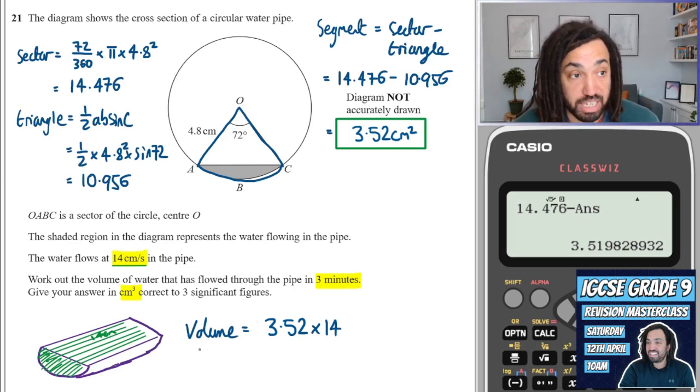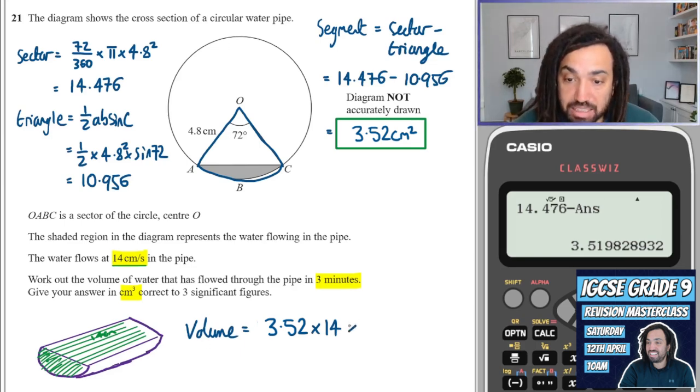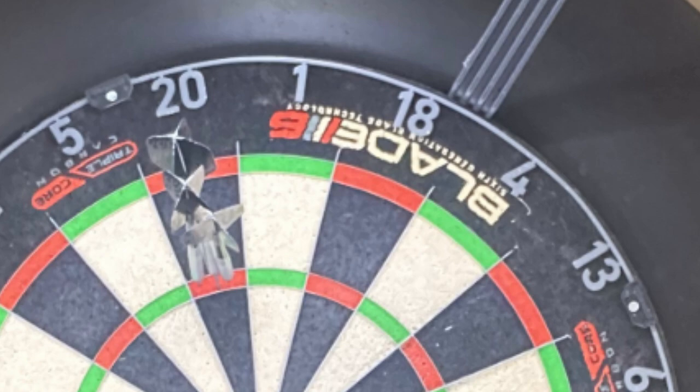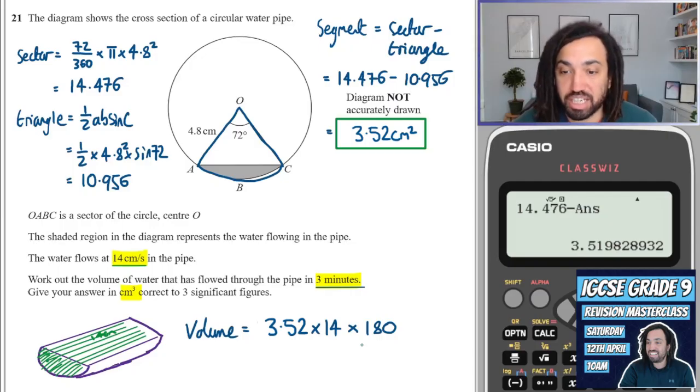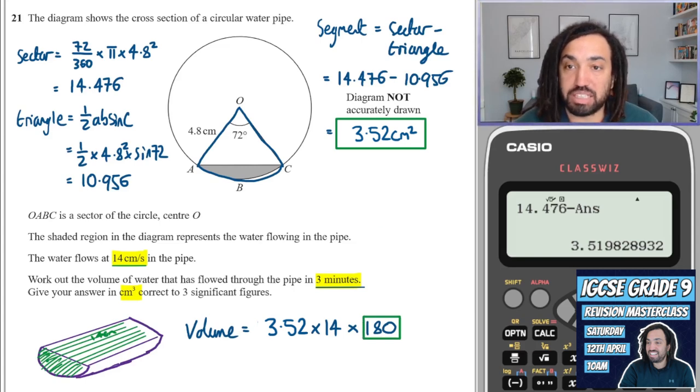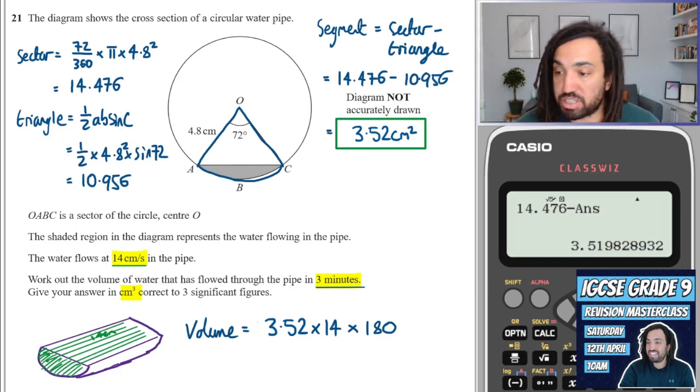Now that is for every second. And what we want is across three minutes. So three minutes is 180 seconds. So I'm going to multiply it by 180.